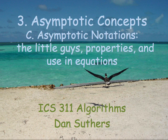Okay, this concludes our review of asymptotic concepts, including the little o and little omega, and properties of all of the asymptotic notations and how we use them in equations. I just have one more topic as part 3, which is a review of some basic discrete mathematics that we'll be using this semester.